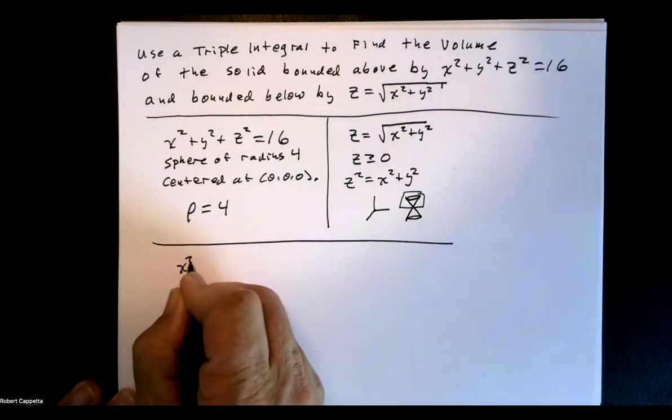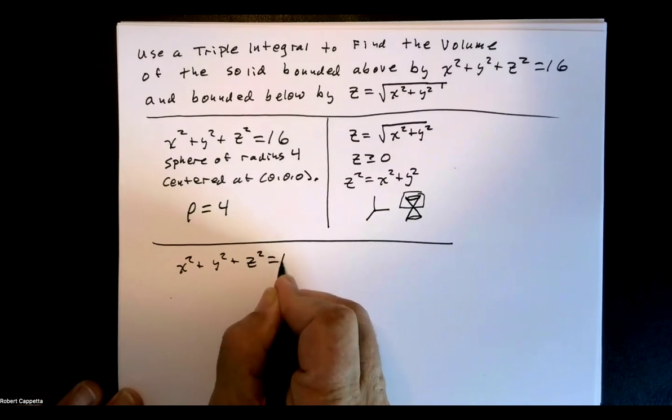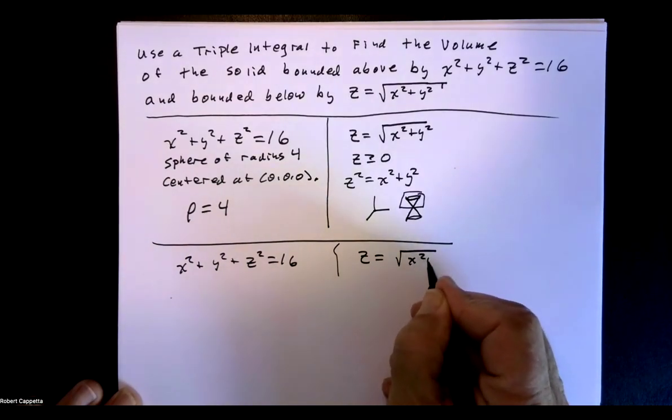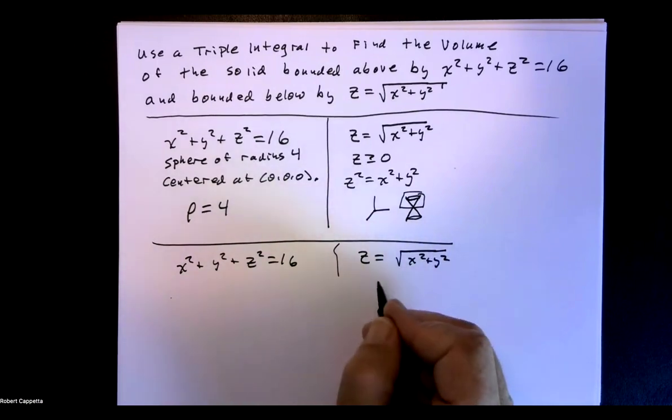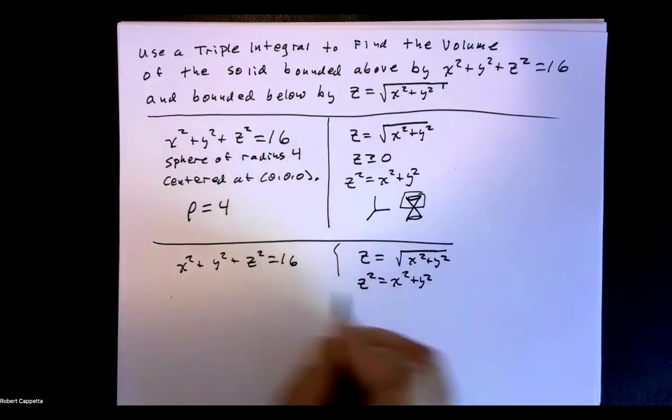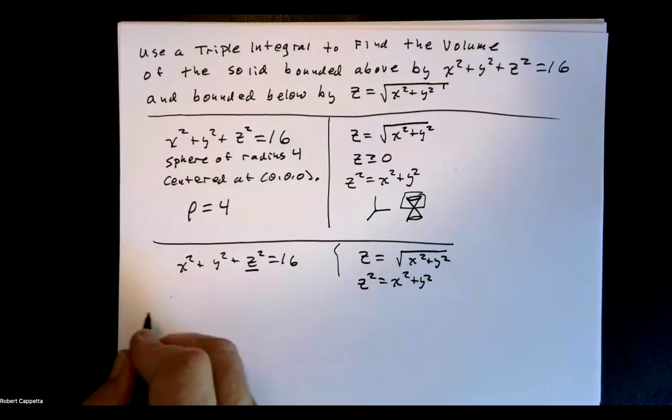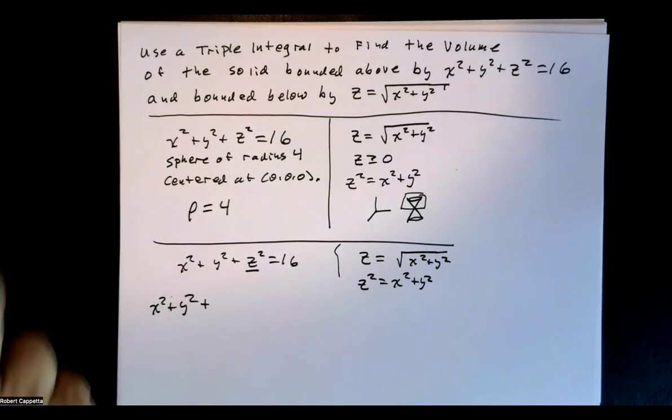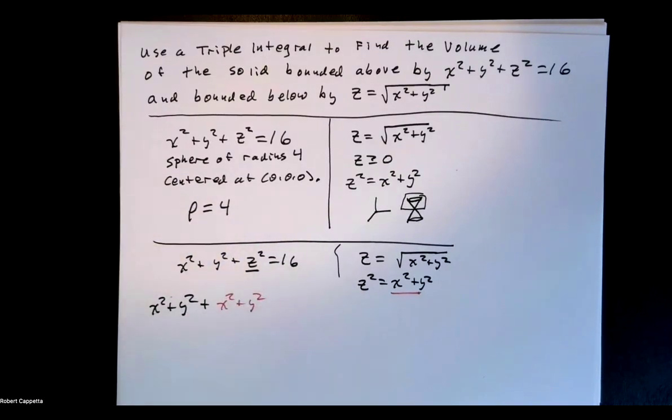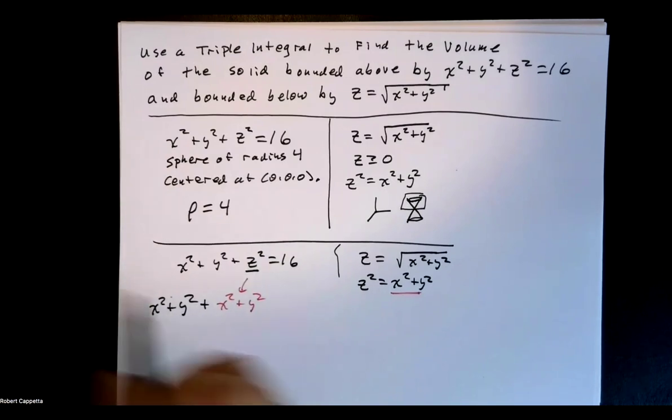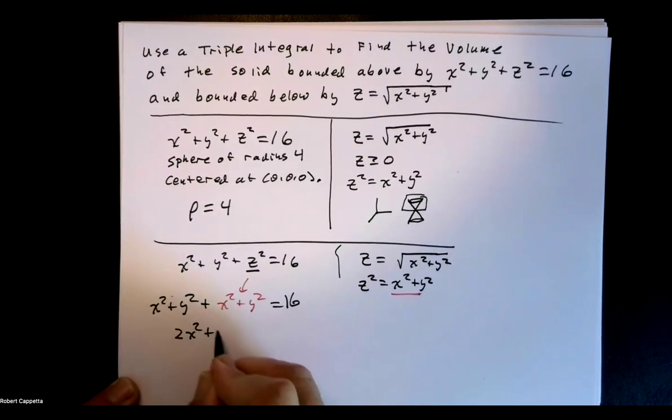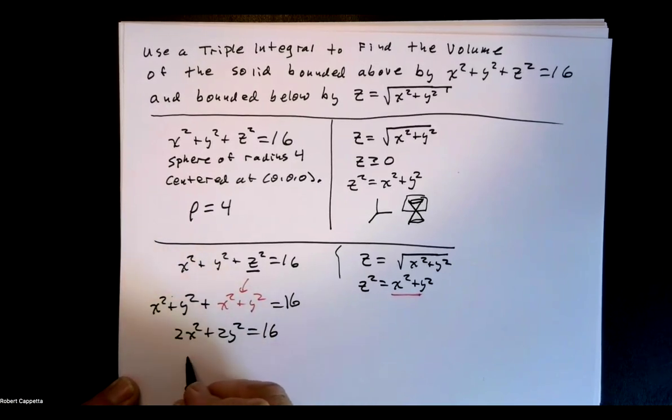So identify the point of intersection. So I have x squared plus y squared plus z squared equals 16. And I have z equals the square root of x squared plus y squared, keeping in mind z has to be positive. Well, if I square both sides, then I get z squared is x squared plus y squared. And then I can substitute for this z squared using that. So I get x squared plus y squared, substituting this, z squared is x squared plus y squared, equals 16. So now I get 2x squared plus 2y squared is 16, or x squared plus y squared is 8.